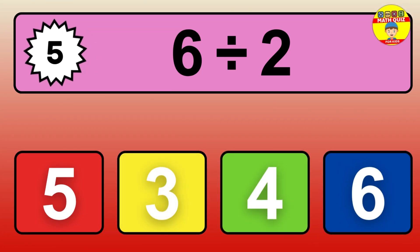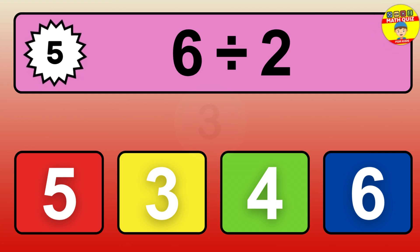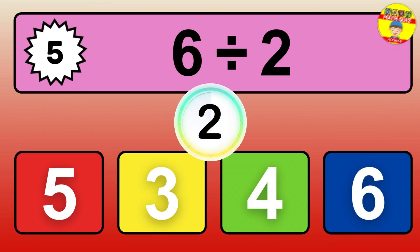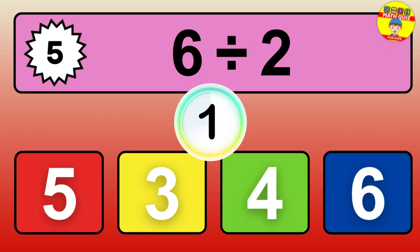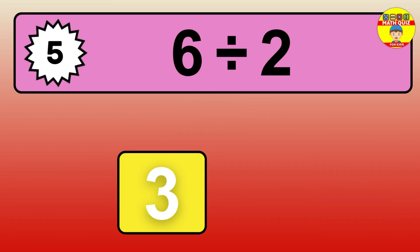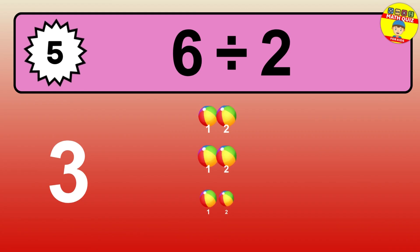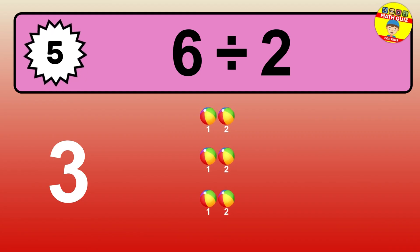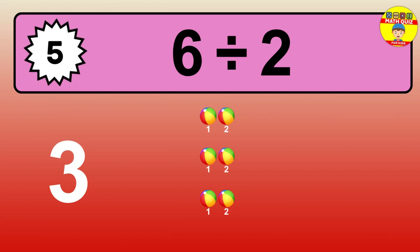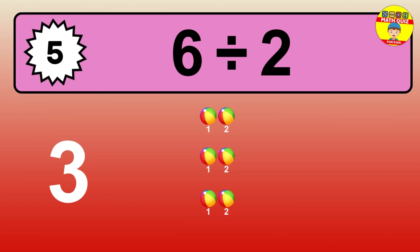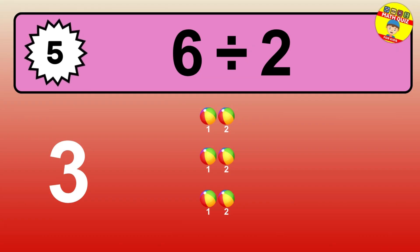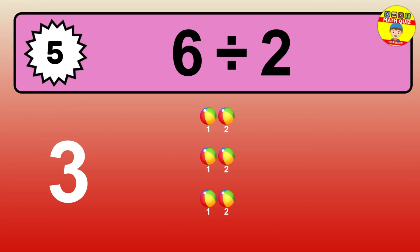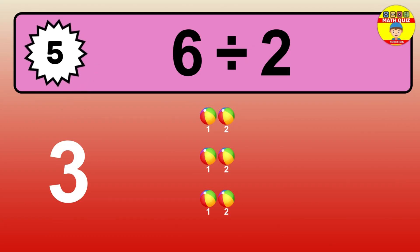56 divided by 8 — time to think. Let's go to the solution. Divide the number 56 by 8. Each group contains 8 units, so dividing 56 by 8 results in 7 equal groups. Thus, the result is 56 divided by 8 equals 7.